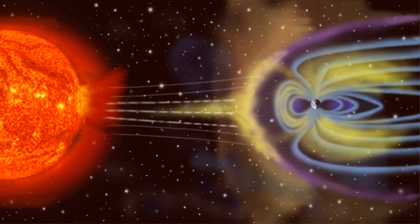A geomagnetic storm, commonly referred to as a solar storm, is a temporary disturbance of the Earth's magnetosphere caused by a solar wind shock wave and/or cloud of magnetic field that interacts with the Earth's magnetic field.